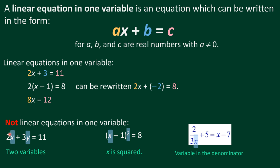Take note: not all equations are linear equations in one variable. For example, 2x plus 3y equals 11 — this is a linear equation but not in one variable because we have two variables, x and y. So this is not a linear equation in one variable.